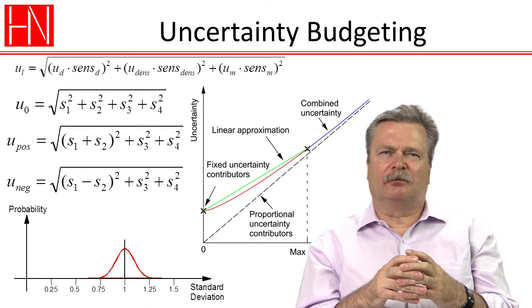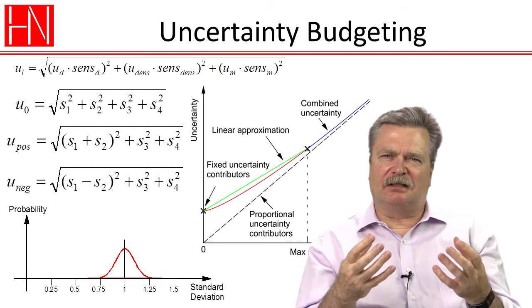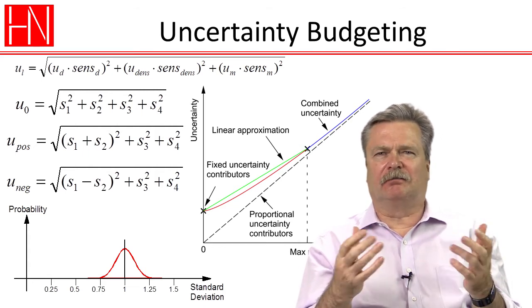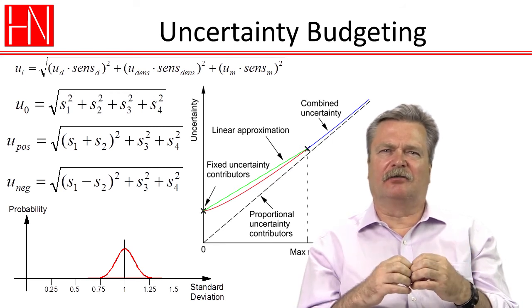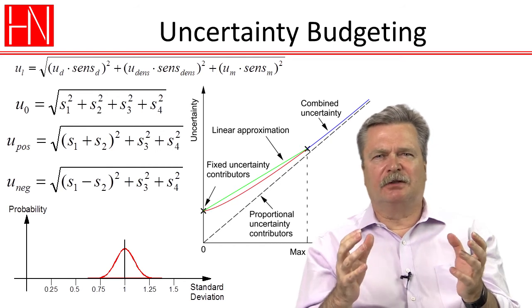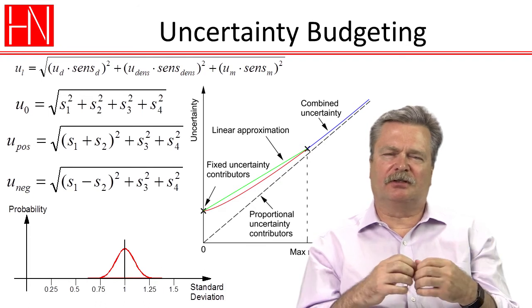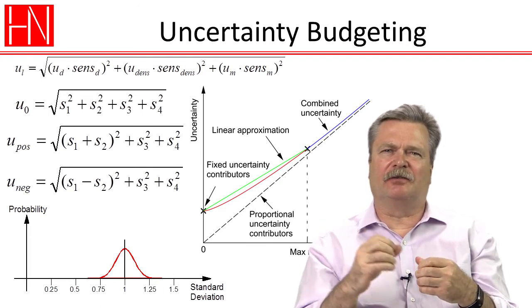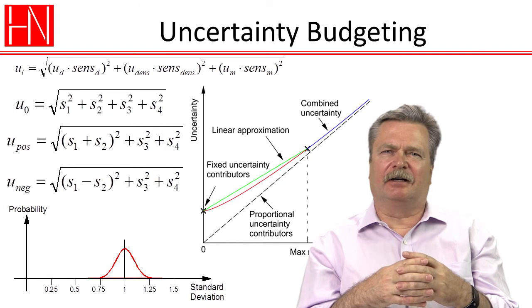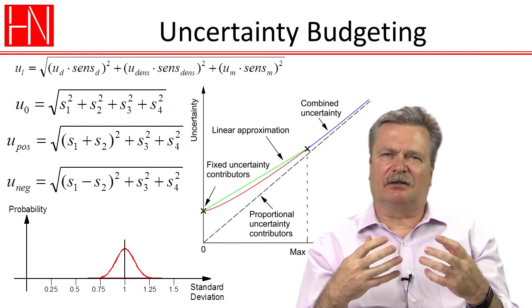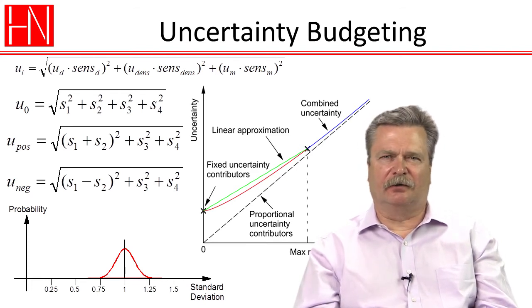What we did talk about was that sometimes you have a measuring process where it's the same over a range typically for a particular measuring instrument. And we talked about how we can make a linear statement out of that because for the vast majority of measuring processes there will be some fixed uncertainty contributors and some uncertainty contributors that are depending on the measured value. And so we talked about how we can make a linear expression out of that that can make a simple and convenient way of expressing the uncertainty of that process over the given range.